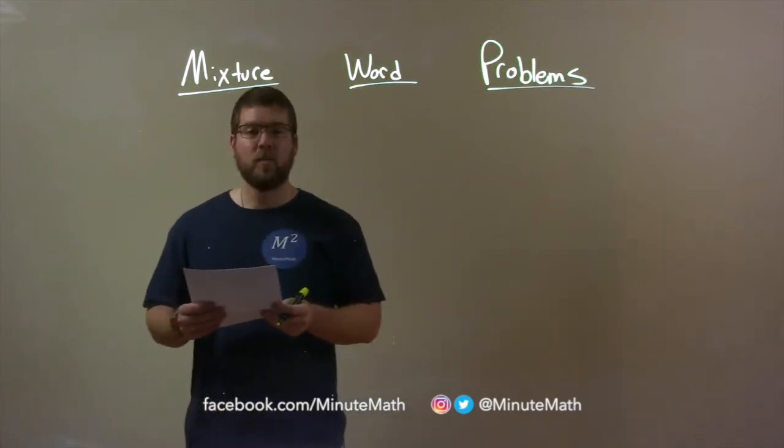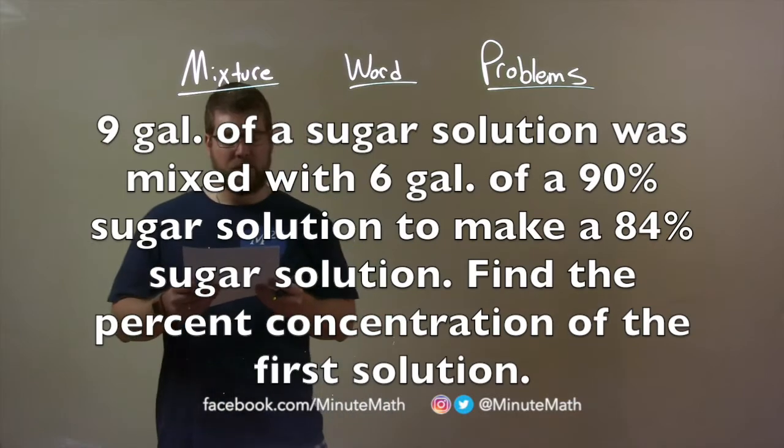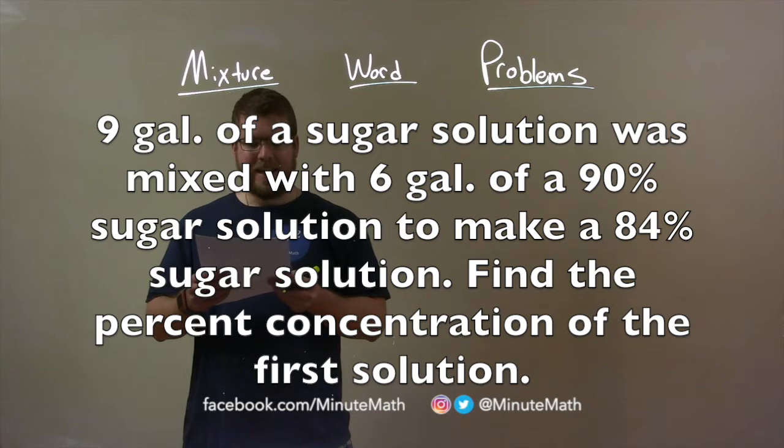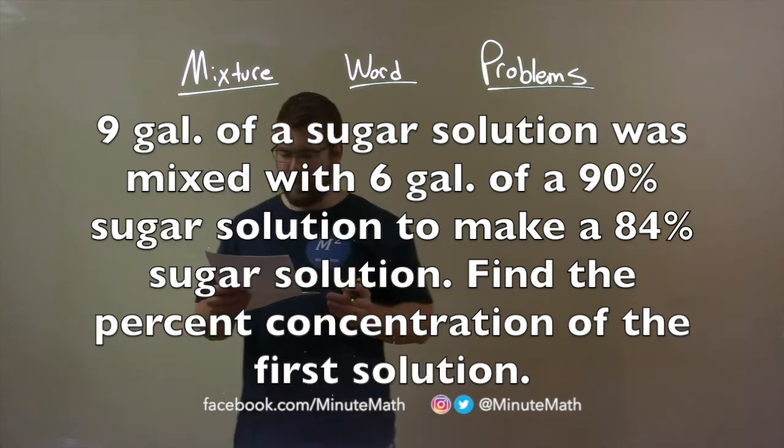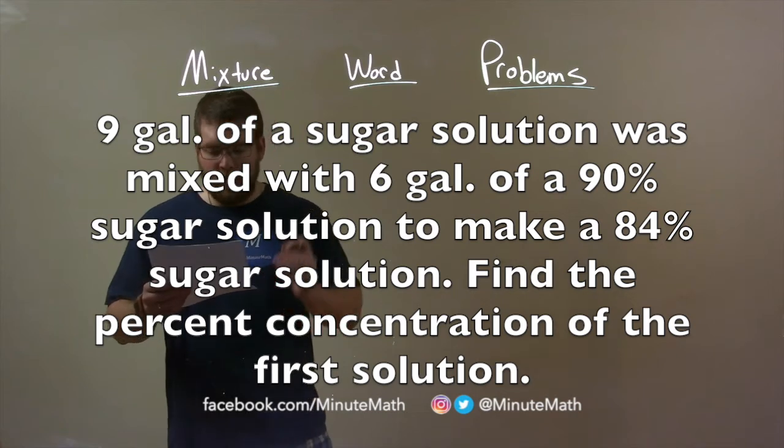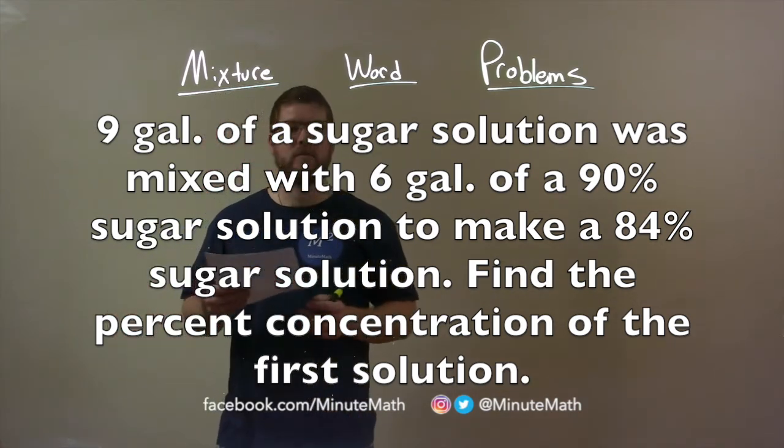If I was given this problem: 9 gallons of a sugar solution was mixed with 6 gallons of a 90% sugar solution to make an 84% sugar solution. Find the percent concentration of the first solution.